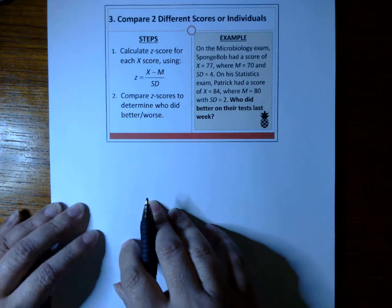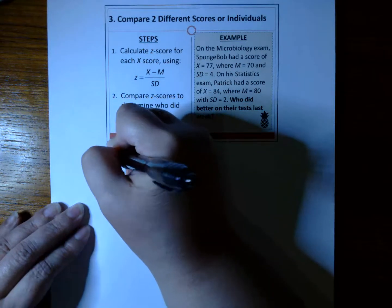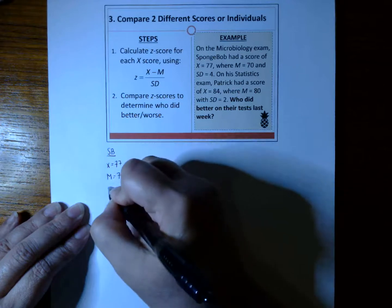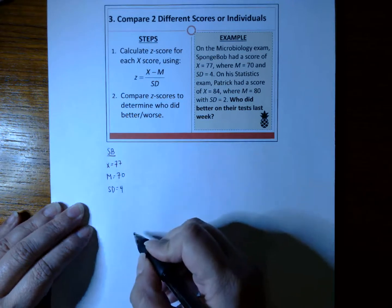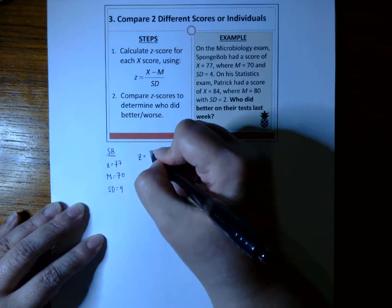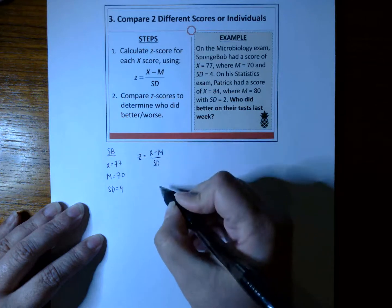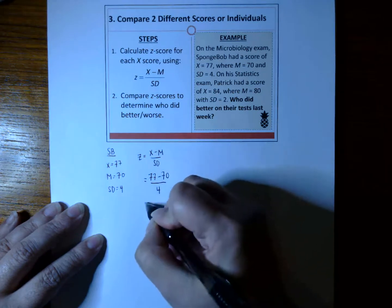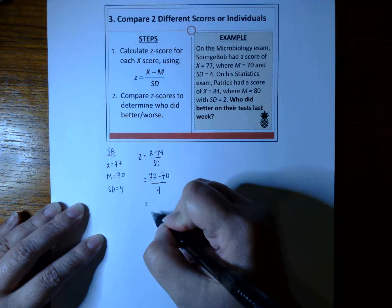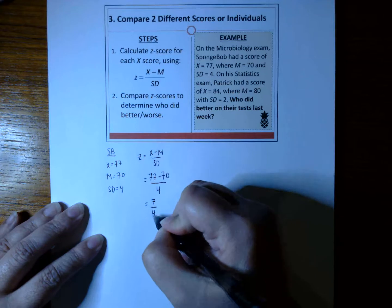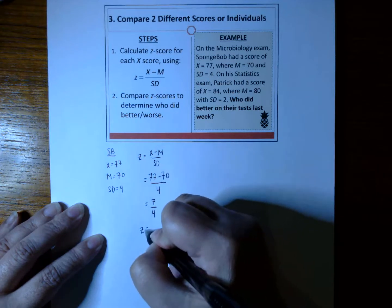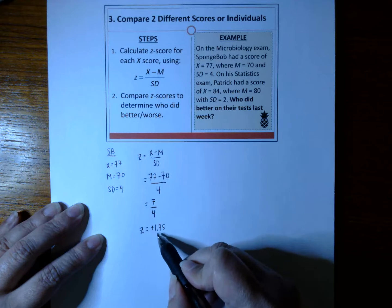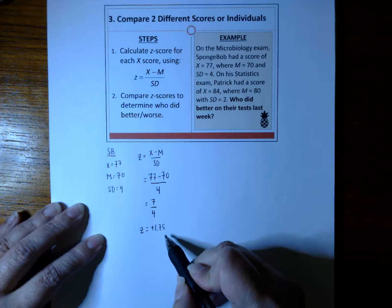Let's break it down into its two parts. I'm going to put SB over here for SpongeBob. We have X equals 77 with a mean of 70 and an SD of 4. Let's plug it into the formula. Z equals X minus M over SD. We have an X of 77, a mean of 70, divided by 4. 77 minus 70 is 7. 7 divided by 4 is a plus 1.75. In other words, SpongeBob scored 1.75 standard deviations above the mean.